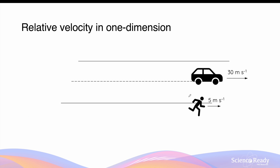What about the relative velocity of the runner from the perspective of the car? In this case, the velocity of the runner relative to the car is equal to the true velocity of the runner, which is 5 meters per second to the right, minus the velocity of the car — which is the observer — that is 30 meters per second. This gives minus 25 meters per second.